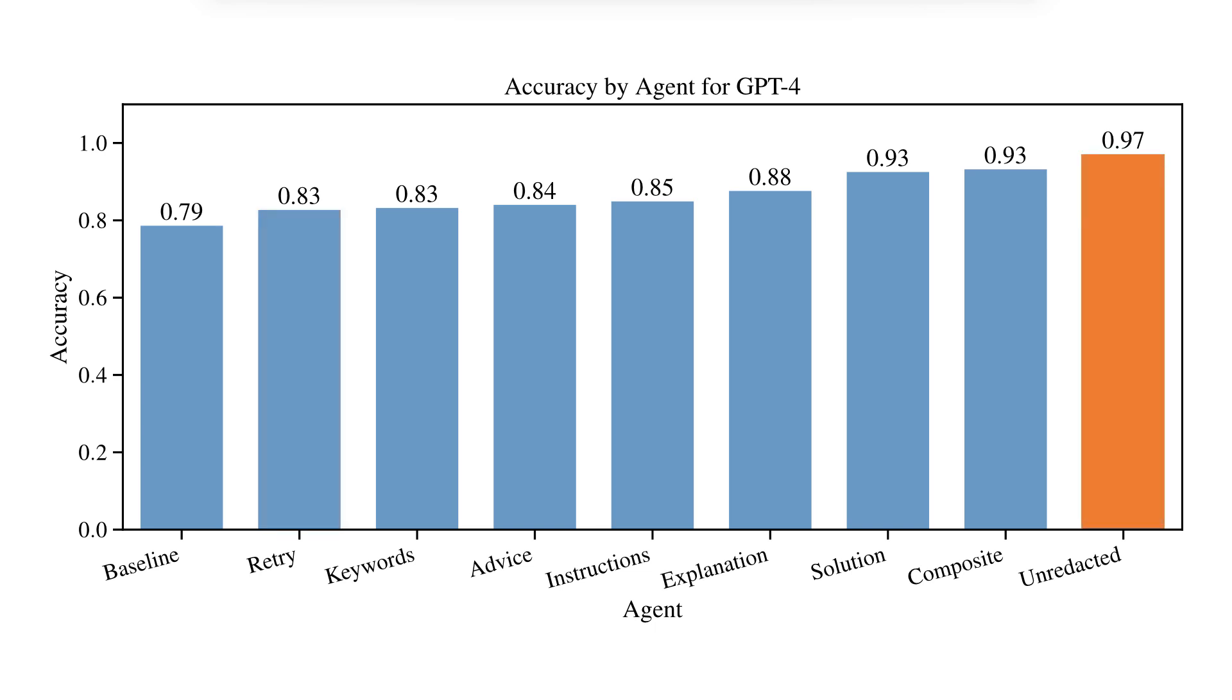Second, as expected, the unredacted agent significantly outperformed the other types of self-reflections. And this confirms that the correct answer redaction was successfully preventing direct answer leakage in the self-reflecting agents.